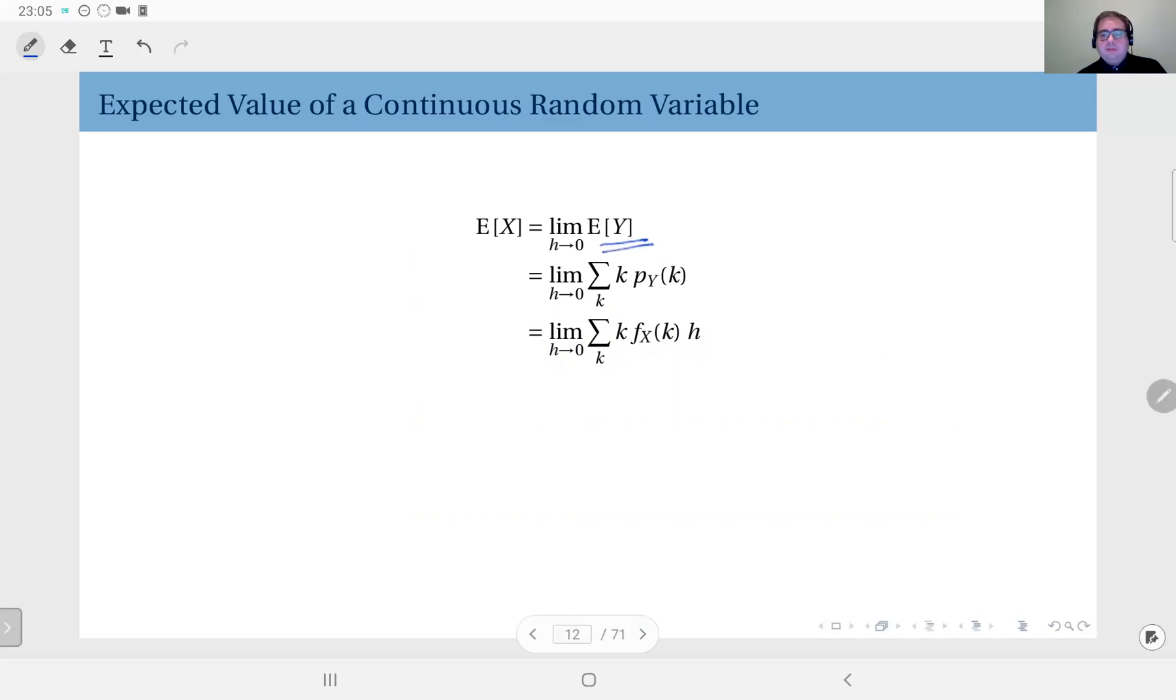So we're going to compute this. If you plug in our definition—this was for discrete random variables—and if you remember, for this pmf, this is what we have for this continuous distribution. If you take the limit, this is a sum, and as the limit where h goes to zero, this actually approaches the Riemann integral of this function.